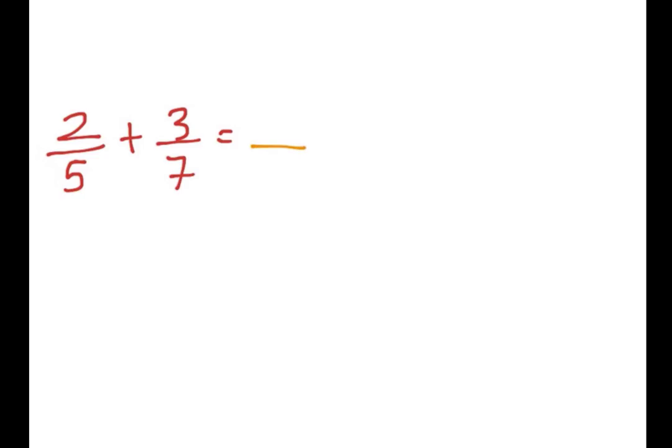what you would do is 5 times 7, which is just 35, and you've got to remember, whatever you do to the bottom, you do to the top. So, since we're timesing the bottom by 7 to get the first fraction, to get 35, we would times 2 by 7, and we would end up with 14.